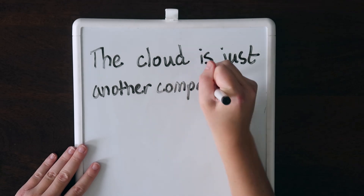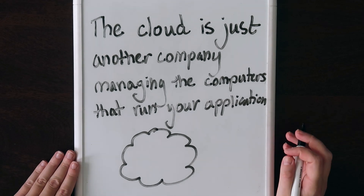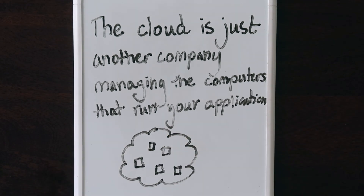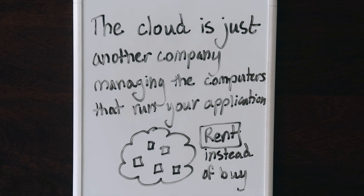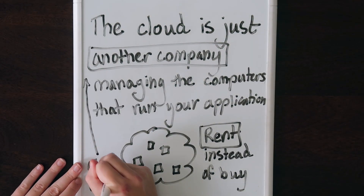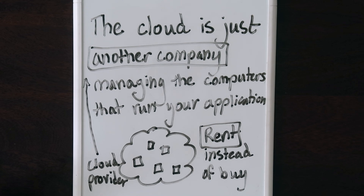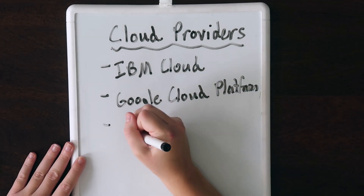The cloud is basically another company managing the computers that run your code and making it available to customers. It's a cloud of computers. Instead of having to buy each computer with a set spec, you simply rent a computer with the specs of your choice, and you can change what computer you rent at any time. You don't have to update the hardware, you don't have to rent the warehouse — you just rent the machine you want to run your code on, and a cloud provider manages the rest. Some cloud providers include IBM Cloud, Google Cloud Platform, and Azure.